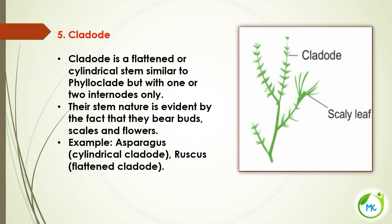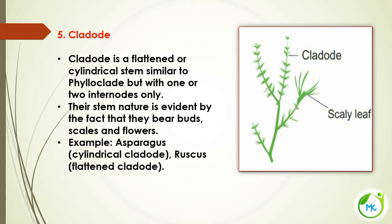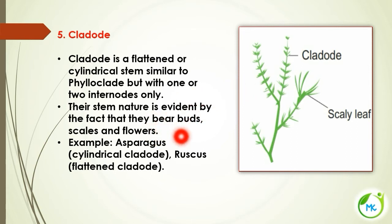The next aerial stem modification is cladode. Cladode is similar to phylloclade — a green, flattened, cylindrical structure — but with only one or two internodes, whereas phylloclade has many internodes. The stem nature is evident by the fact that it bears buds, scales, and flowers. Example: Asparagus.